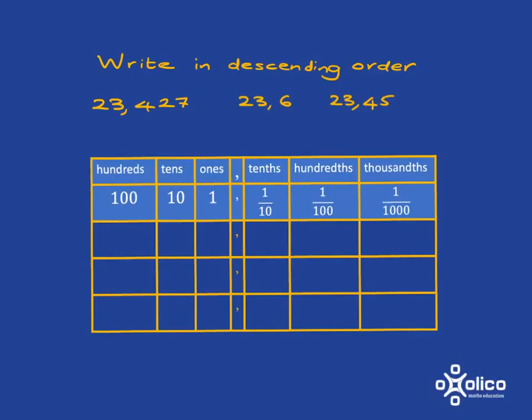So, if you are asked to write these in descending order, remember, descending means going from biggest to smallest, the easiest way to do it is simply to pop them into a place value table and then compare.